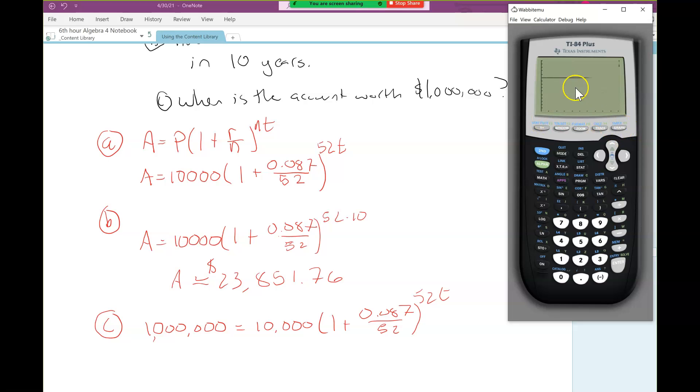I'm going to hit graph now. Here's my $1 million line. Here's my compound interest formula. There's my intersection. So let's find that intersection. Intersect command, enter, enter, enter. So 52.98 years.